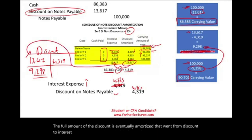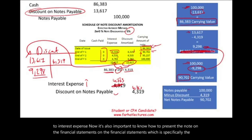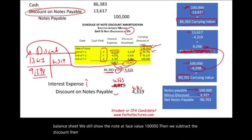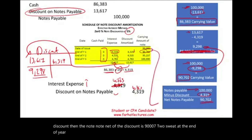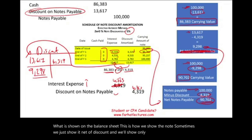It's important to know how to present the note on the balance sheet. We show the note at face value $100,000, then subtract the unamortized discount. At the end of year one, the note net of the discount is $90,702. On the CPA exam, they ask these questions frequently. Sometimes we show it net of discount and only report that amount, disclosing the discount detail in the notes to the financial statements.